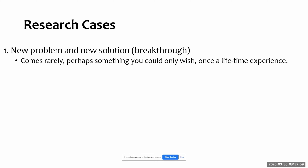How can you make a strong case for your research? There are four different cases. Case one is when you find a new problem and you come up with a new solution — something happening in the world that nobody has seen before, and you come up with a completely new solution for it. This is called breakthrough research, and it's very uncommon.